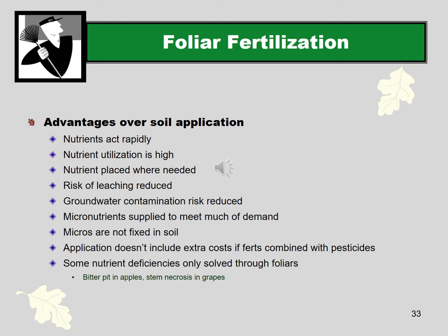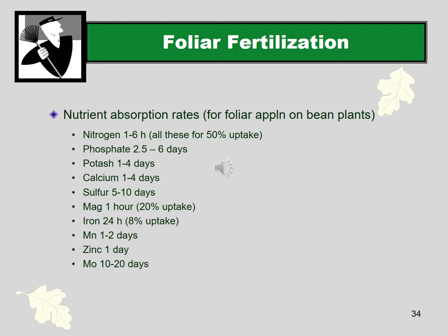For foliar fertilizer applications, a study on bean plants tracked how fast different nutrients are absorbed into the plant through the leaves — showing that foliar application can be faster than waiting for soil-applied nutrients to be taken up through roots, making it a useful technique when plants need nutrients quickly.